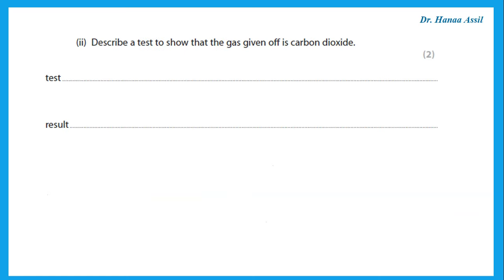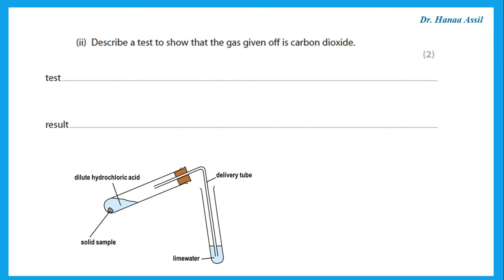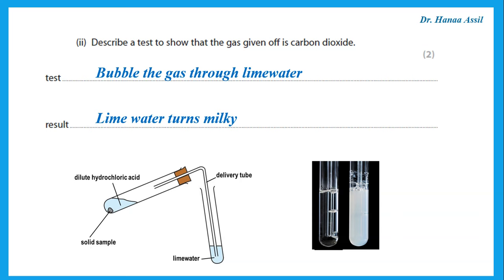Describe a test to show that the gas given off is carbon dioxide. The test for carbon dioxide is to bubble the gas through lime water — the lime water turns milky. Remember, if we add an acid to a carbonate or hydrogen carbonate, as in this case, it gives off carbon dioxide gas that turns lime water milky.